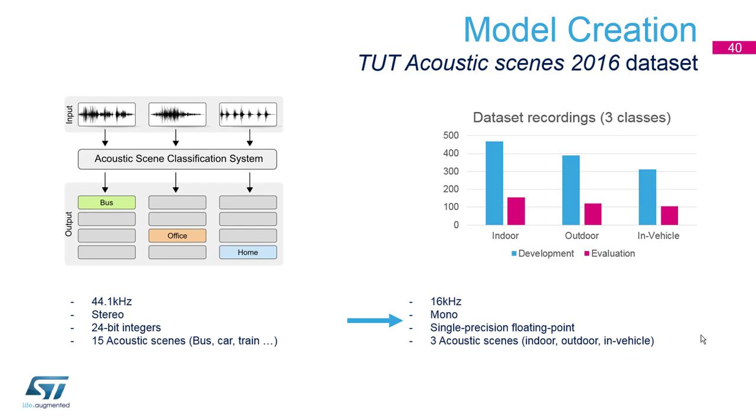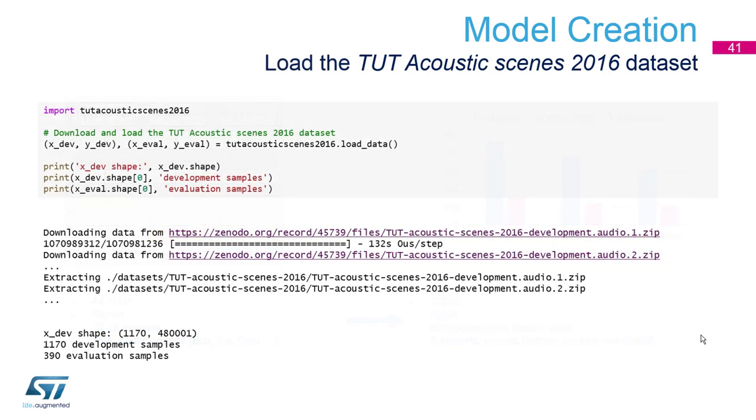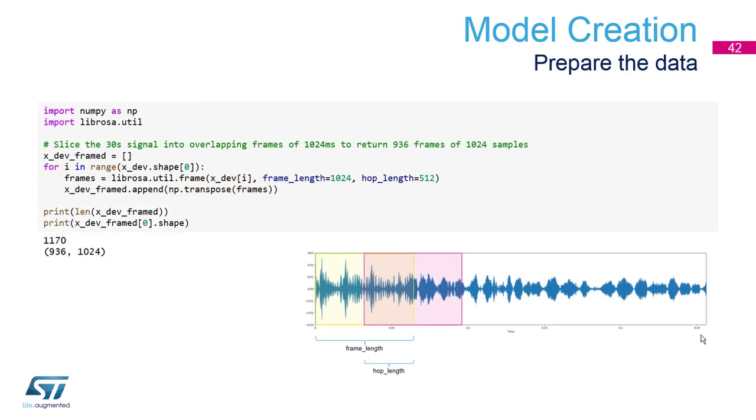The Python code to download the data set is just load data into the development data set with the inputs and ground truth or expected output for development and evaluation. Then we want to frame this input signal. They originally came at 30 second long input recording and we want to cut them down to one second long clips, so we get even more data.